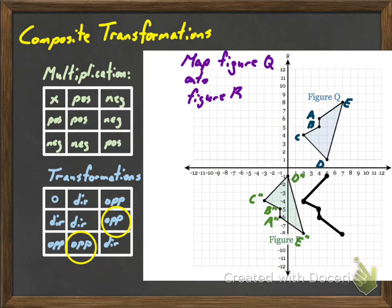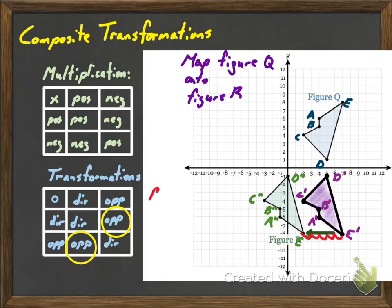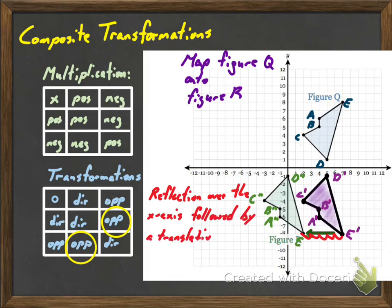So I'm going to go ahead and reflect it over the x-axis. And there's my A double prime, B double prime, C double prime, E double prime. Then I just need to slide it to the left by this translation vector — which is one, two, three, four, five units. So that's all it is: it's a reflection over the x-axis, followed by a translation to the left five.